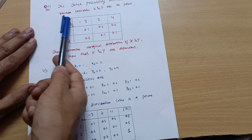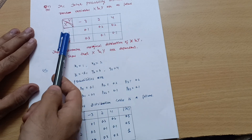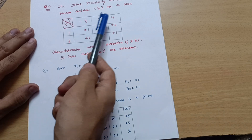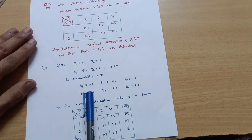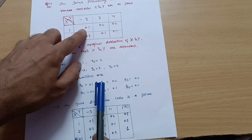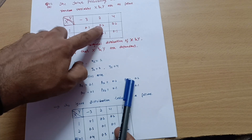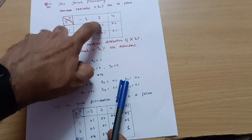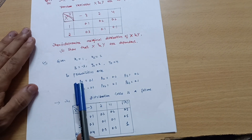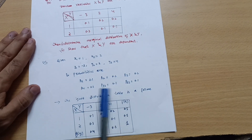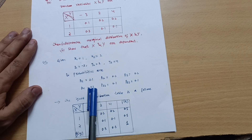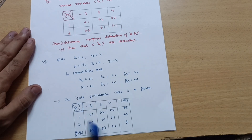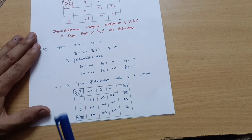The given x values are x1 = 1 and x2 = 2, and the y values are y1 = −3, y2 = 2, y3 = 4. The respective probabilities are: p11 = 0.1, p12 = 0.2, p13 = 0.2 (first row), and p21 = 0.3, p22 = 0.1, p23 = 0.1 (second row).